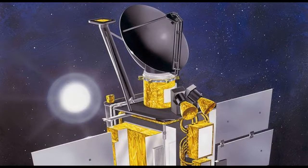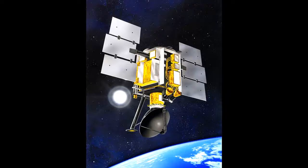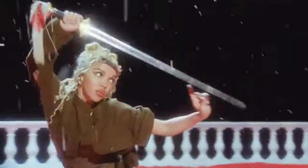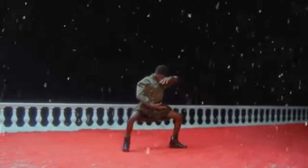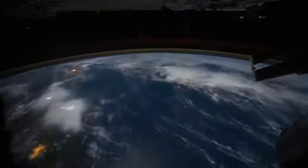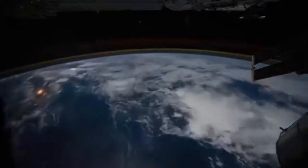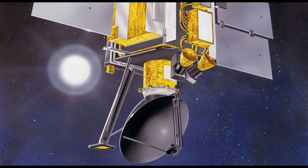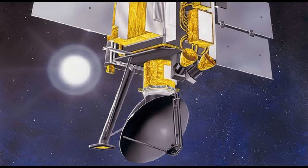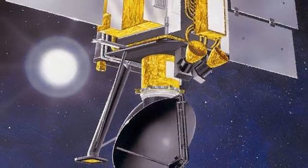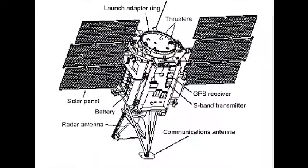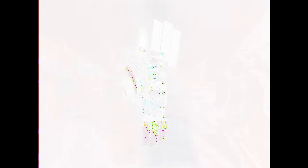QuikSCAT measured winds in measurement swaths 1,800 km wide centered on the satellite ground track with no nadir gap, such as occurs with fan beam scatterometers such as NSCAT. Because of its wide swath and lack of in-swath gaps, QuikSCAT was able to collect at least one vector wind measurement over 93% of the world's oceans each day.